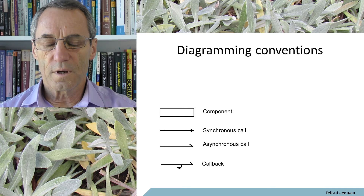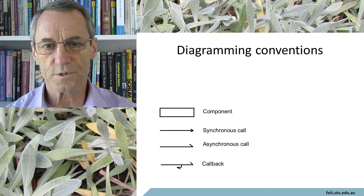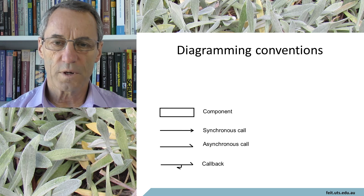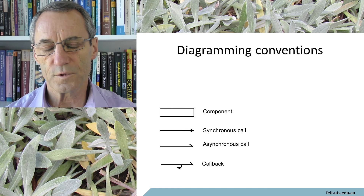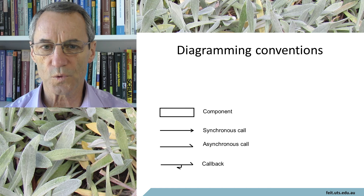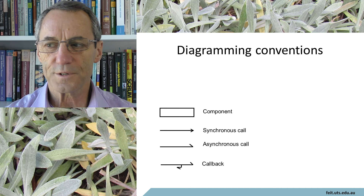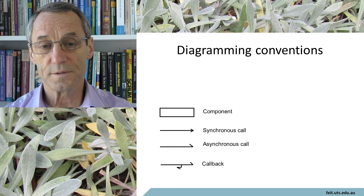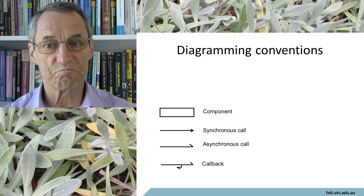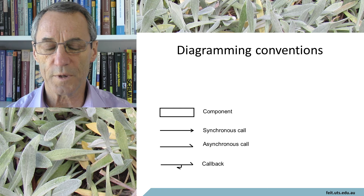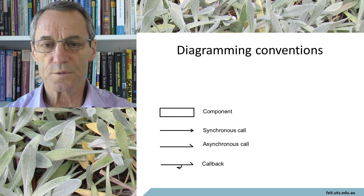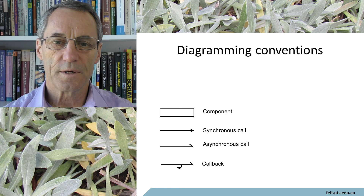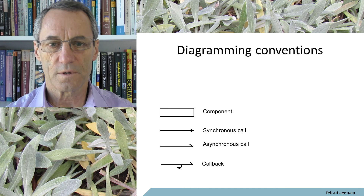Not only do we need to indicate the kind of service it is, but we also need some sort of conventions about the communication between them. So we have a component, which is normally a rectangular box. We have a synchronous call, which is just an arrow. An asynchronous call is an arrow with a half head — that's where it just posts some information and does not expect any feedback. A callback is where information is posted asynchronously and then it's expecting some information to come back, but we're not waiting on it — and that's an arrow head with a shifted half arrow head.